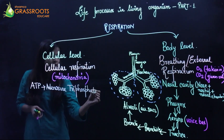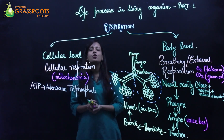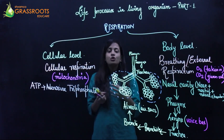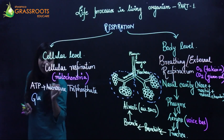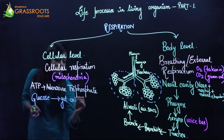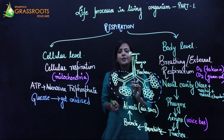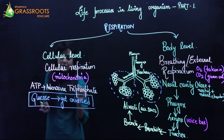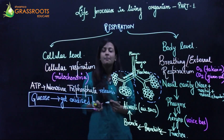ATP — adenosine triphosphate — is the energy currency. This leads to the production of energy in the form of ATP. The carbohydrate that gets oxidized is in its simplest form, which is glucose. The glucose present in carbohydrates gets oxidized, and in this process of oxidation, ATP is released in the form of energy. This entire process takes place in the mitochondria.